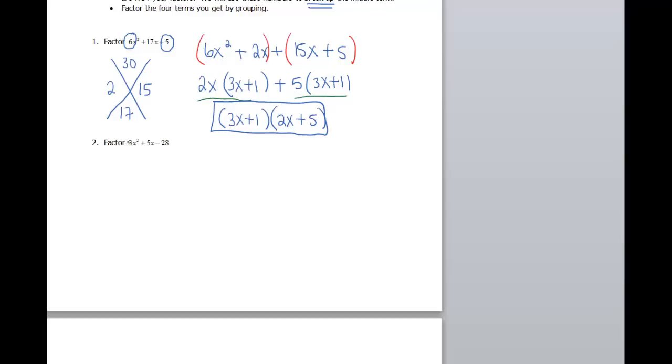My next one. My a in this case is 3, my c in this case is negative 28. When I multiply negative 28 by 3, I get a negative 84. I haven't factored that one in a long time. My bottom number again is going to be my middle coefficient, so that is a 5.